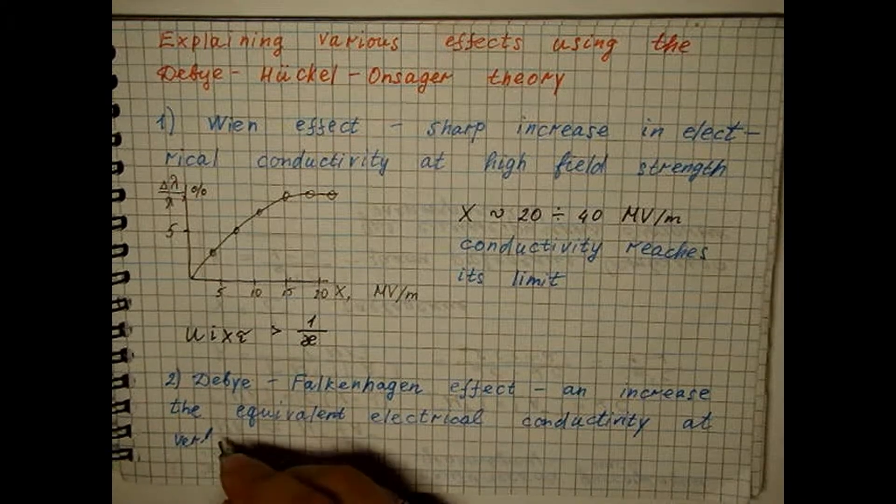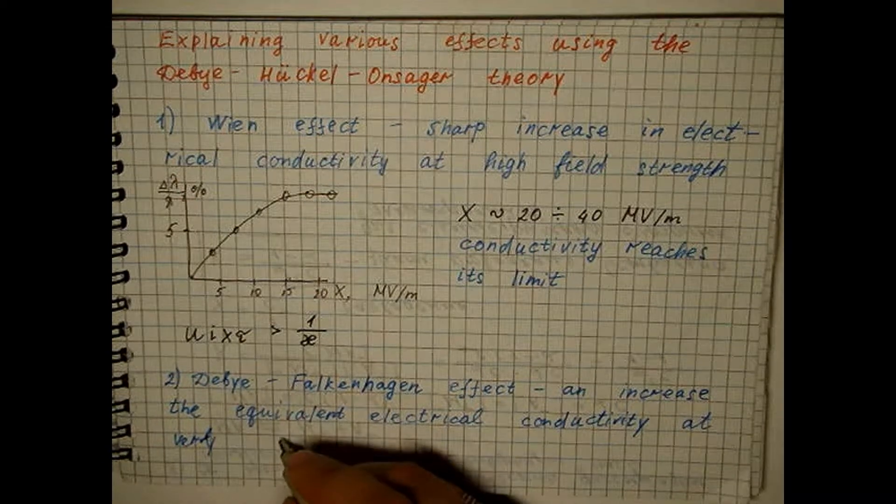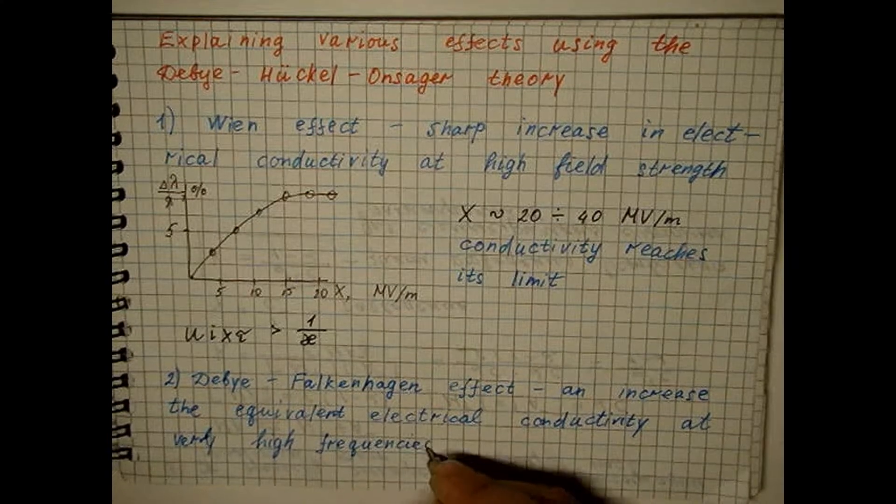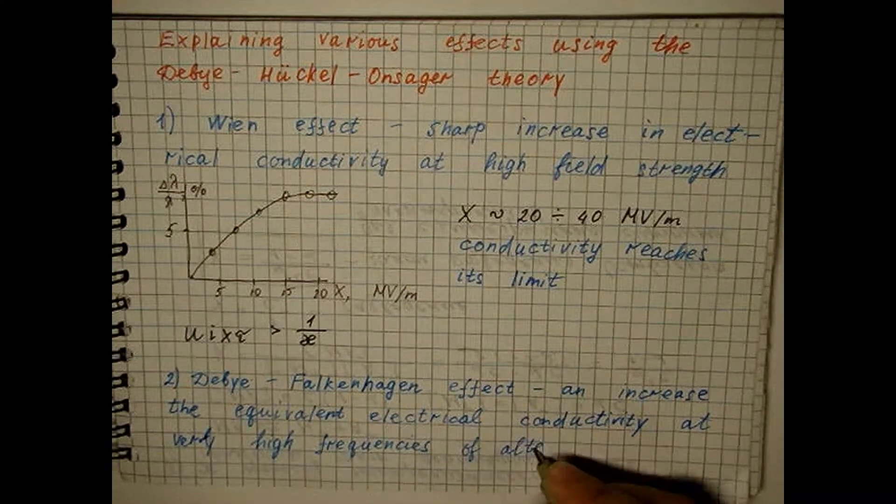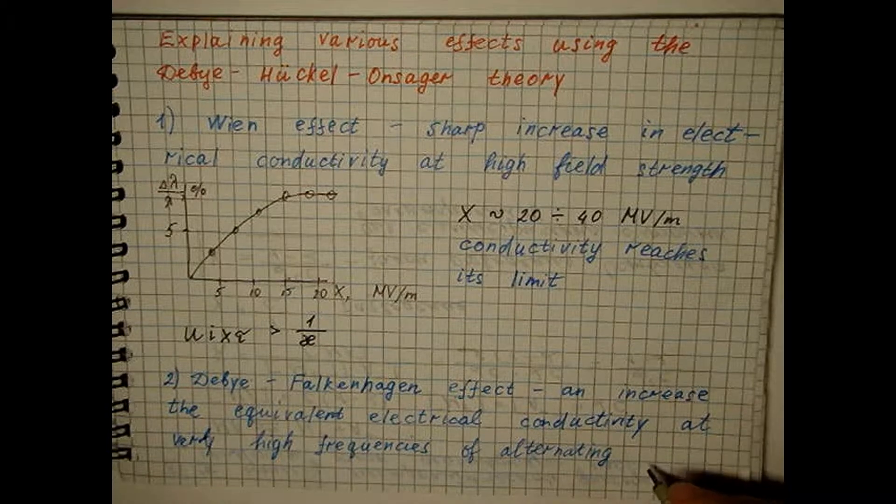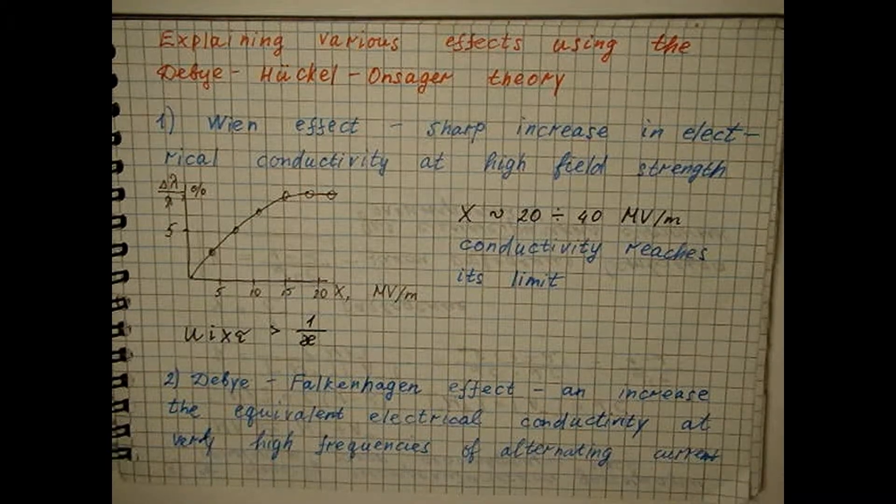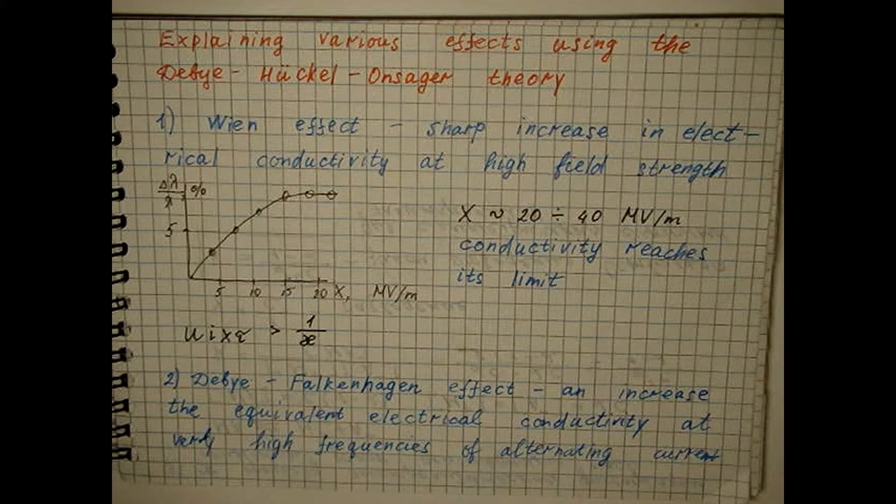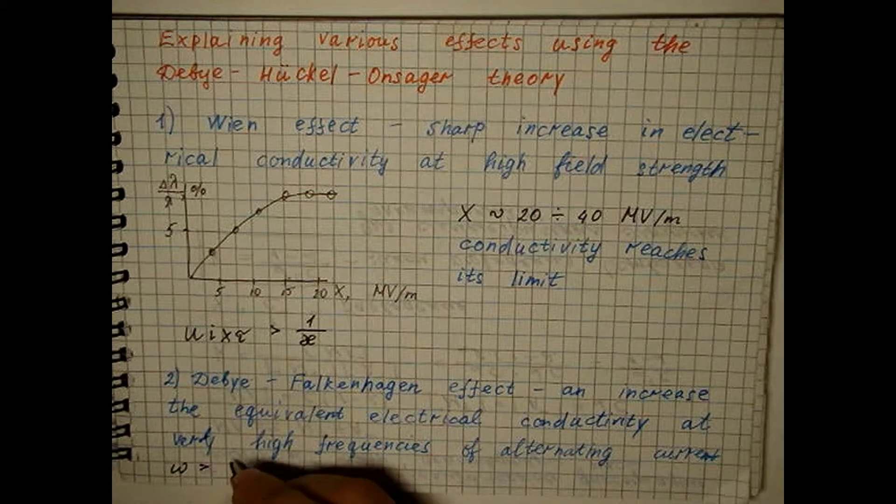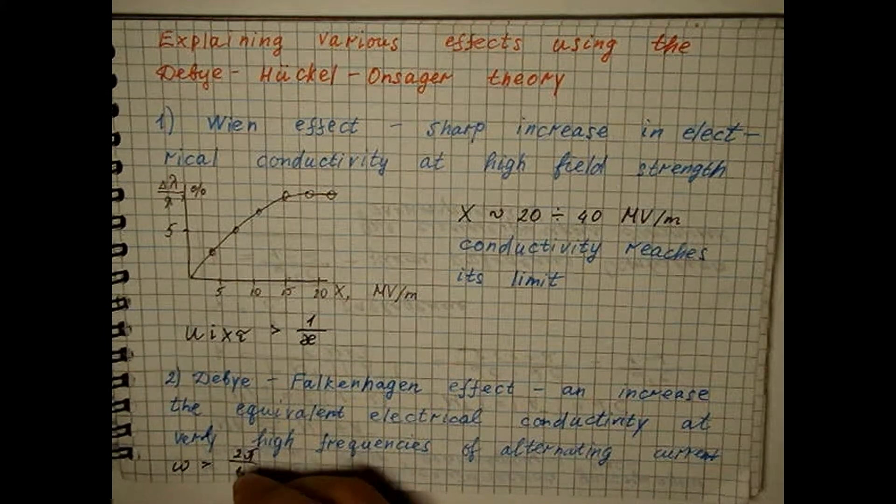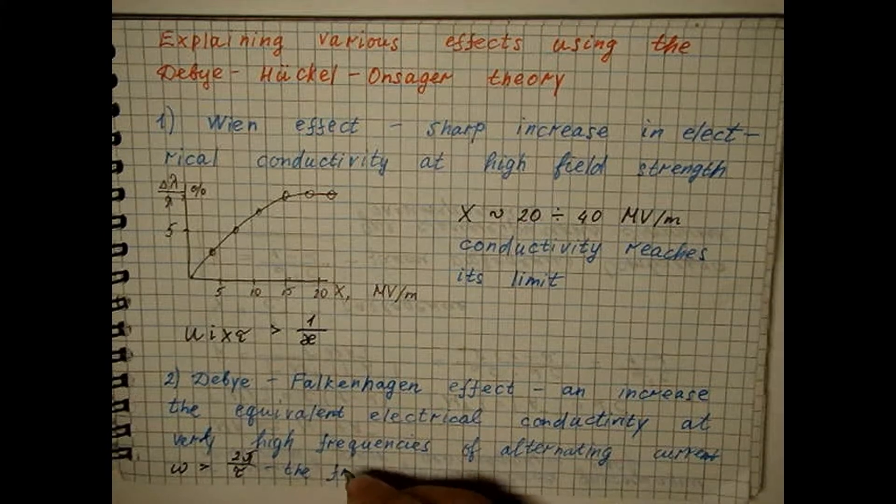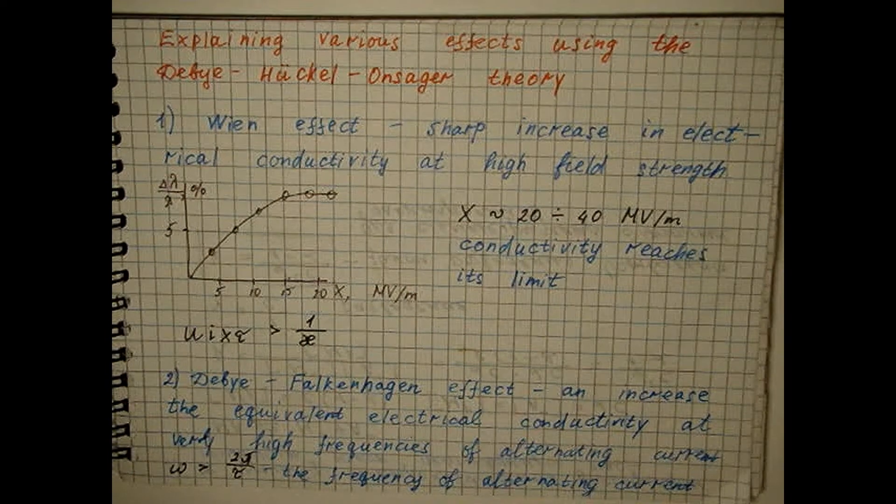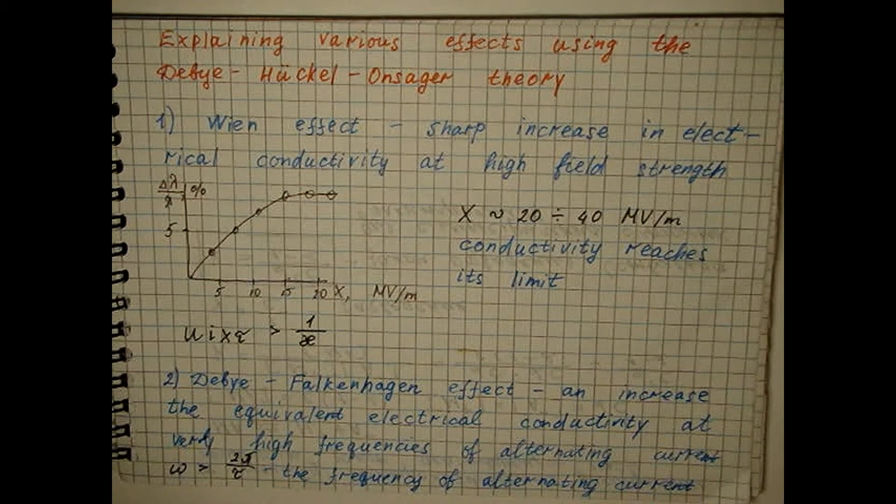If the frequency of the alternating current used for measurements is sufficiently high, then the symmetry of the ionic atmosphere is not broken and the relaxation effect of the chloration disappears.